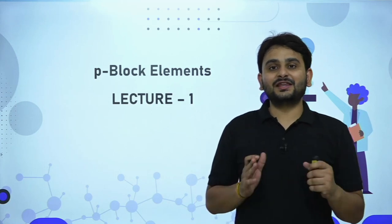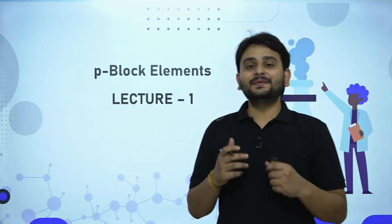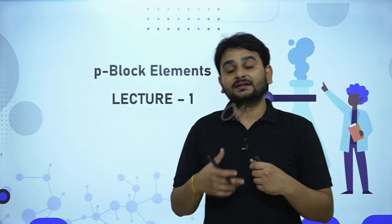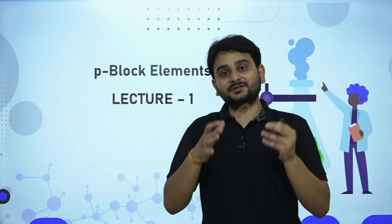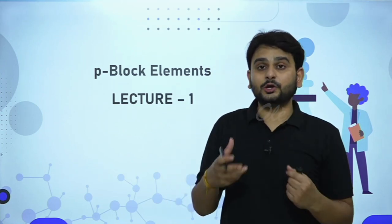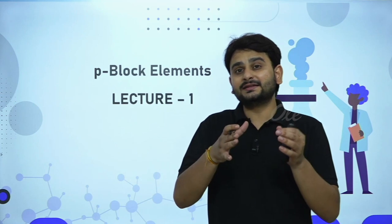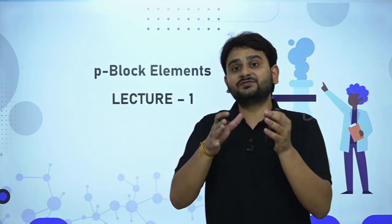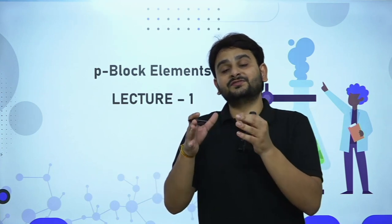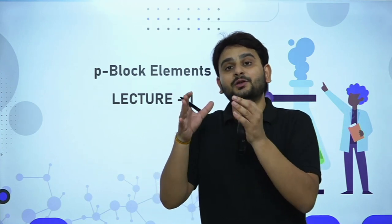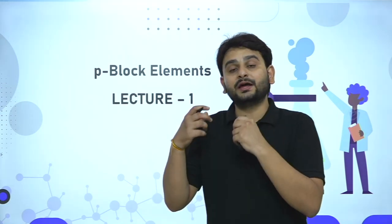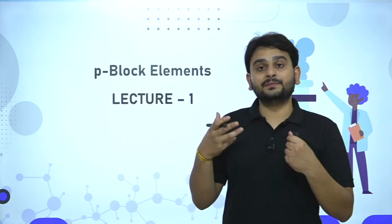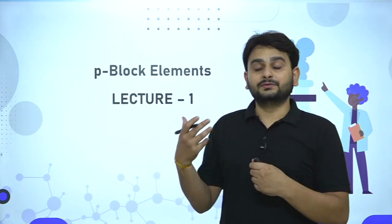Hello students, a very warm welcome. Today we'll be starting with a new topic: P-block elements, Lecture 1. P-block elements cover group 13 to group 18 in the periodic table. Group 13 is the boron family, 14 is the carbon family, 15 is the nitrogen family, 16 is the chalcogen or oxygen family, group 17 is the halogens — fluorine, chlorine, bromine, iodine, astatine — and group 18 is the noble gases: helium, neon, argon.